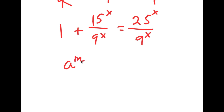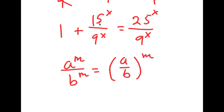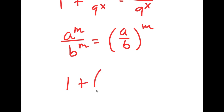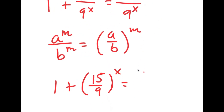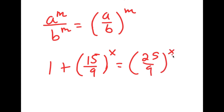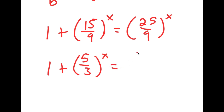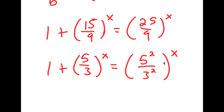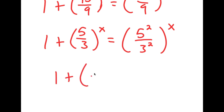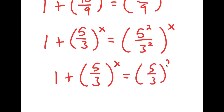Now, if I have something in the form a to the power of m over b to the power of m, this is the same thing as (a over b) to the power of m. So 15^x over 9^x equals (15/9) to the power of x, and 25^x over 9^x equals (25/9) to the power of x. Now 15 over 9 simplifies to 5 over 3, and 25 over 9 simplifies to 5 squared over 3 squared, so that's (5/3) squared to the power of x.